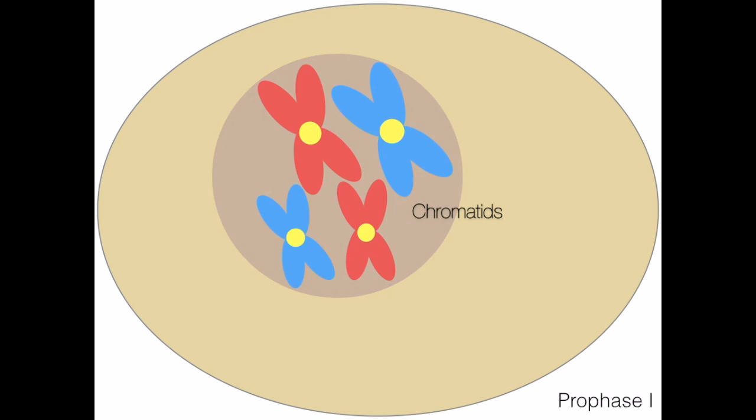Prophase 1 is the first phase of meiosis. During this stage, DNA condenses and forms chromosomes, and the nuclear membrane breaks down.